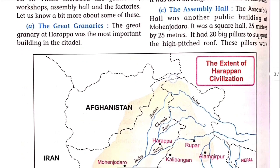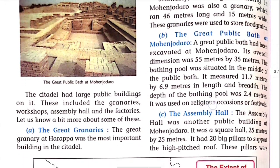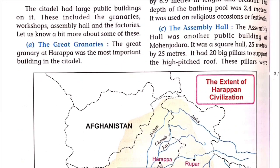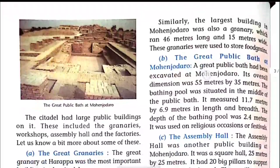First point: The Great Granaries। The great granary at Harappa was the most important building in the Citadel। Similarly, the largest building in Mohenjo-daro was also a granary — which was about 46 meters long and 15 meters wide। These granaries were used to store food grains — अनाज को store करने के लिए इन buildings का इस्तेमाल किया जाता था।